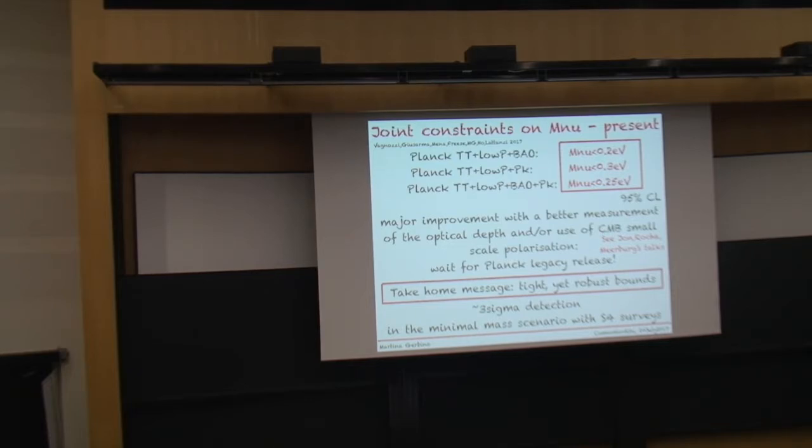We expect to improve these constraints increasingly by adding more data sets, in particular by a better measurement of the polarisation, both at small and large scales, as we have heard many times during these days, until we can reach, eventually, the first measurement of the neutrino masses by means of cosmological observables, which is very promising even in the minimal mass scenario allowed by the normal hierarchy.